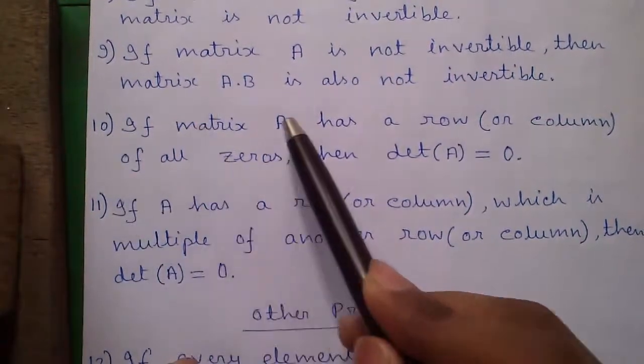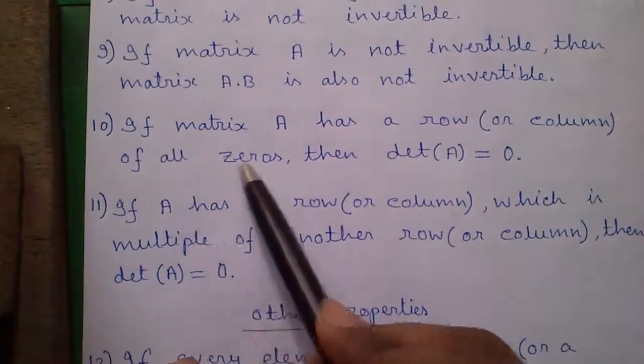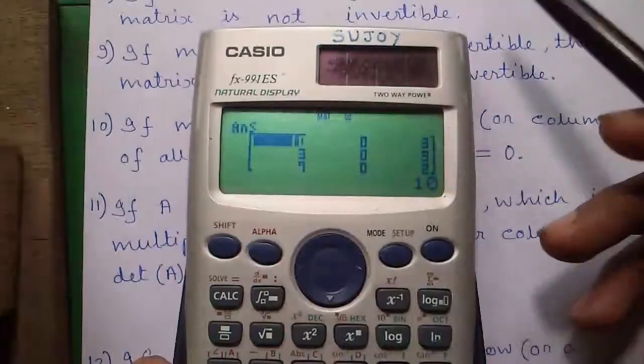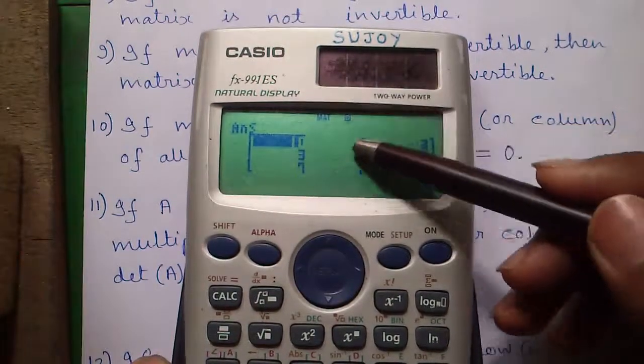Tenth property: if matrix A has a row or column of all zeros, then determinant of matrix A is equal to 0. So we have a matrix A with column 2 with all zero numbers.